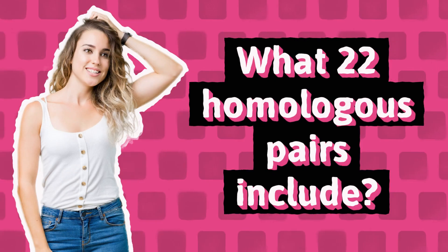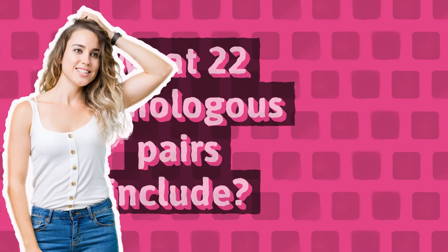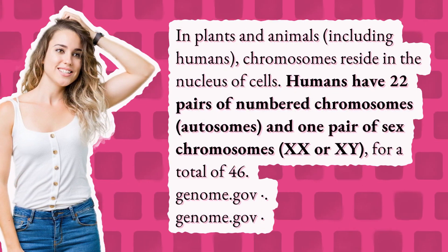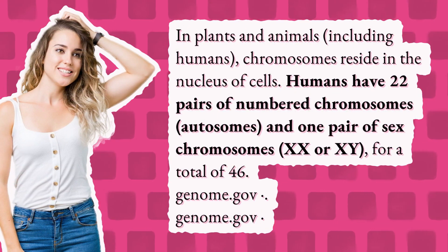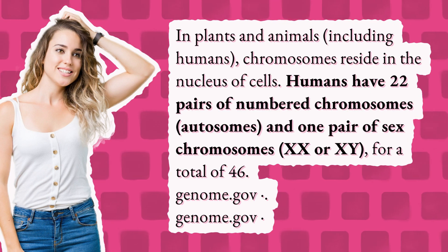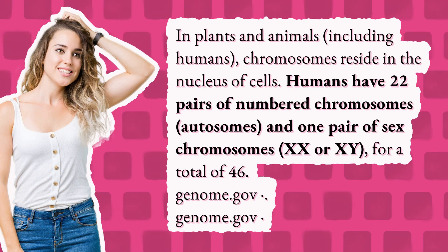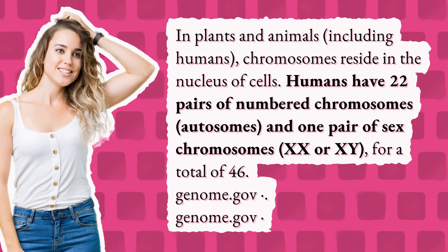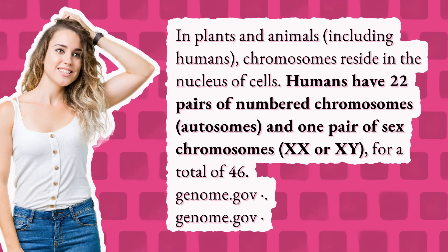What do 22 homologous pairs include? In plants and animals, including humans, chromosomes reside in the nucleus of cells. Humans have 22 pairs of numbered chromosomes, called autosomes, and one pair of sex chromosomes, XX or XY, for a total of 46.